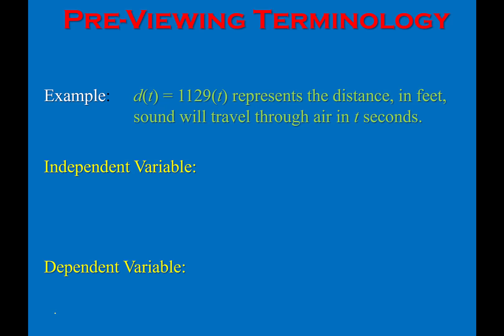Here's the classic distance equals rate times time. We have a function d of t, so distance is the function and the input is time. The independent variable is going to be the time, because you decide how long you're going to let it travel before you measure how far it's gone. So the more time that goes by, the further that sound has traveled. Your dependent variable is going to be the distance, measured in feet — it's dependent because it depends upon how long the sound travels.